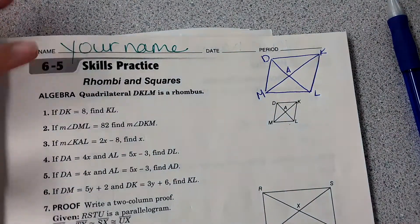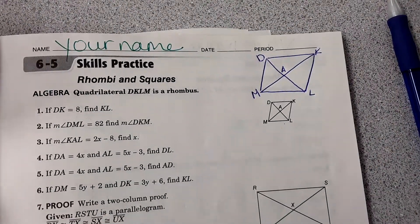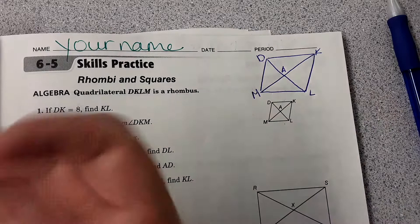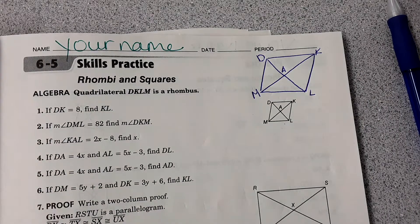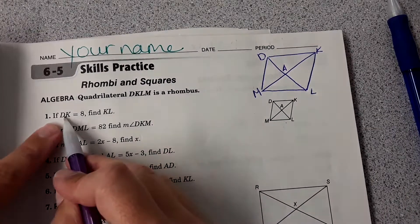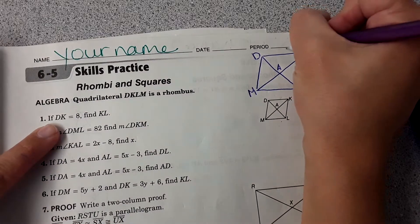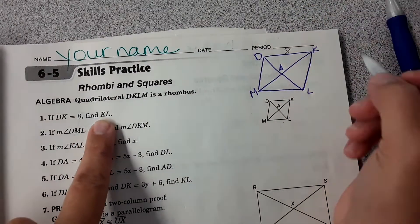Okay, so now we're going to use the rules that we learned about rhombuses to find angle measures and side lengths and all of that. So first of all, it starts off pretty easy. It says if DK is 8, find KL.